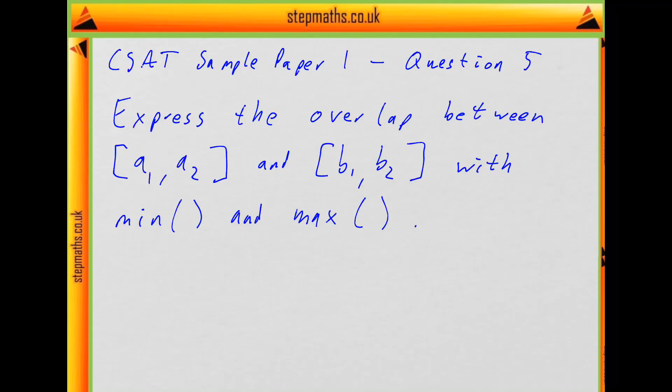This is question 5 from the first CSAT sample paper. In this question we're asked to find the expression for the overlap between two intervals given generally as a1 to a2 and b1 to b2, using the functions min and max as a single expression. So we're not splitting it into cases, we're going to find a single expression.